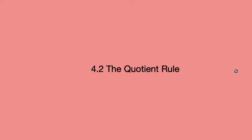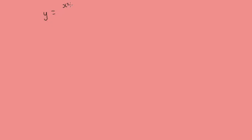Today we're going to be looking at the quotient rule. Previously we did the product rule of differentiation. Today we're going to be looking at how to differentiate functions that look like a quotient — where you're dividing one function by another.